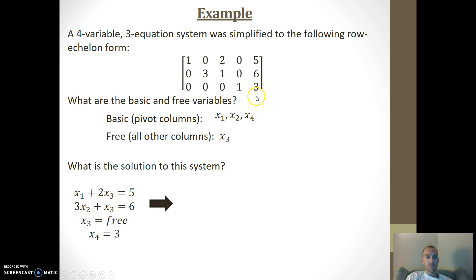And what we do here is we rewrite these equations so that it is the basic variable equals everything else. So here I would subtract the 2x3. And the second, for x2, I'd end up dividing by 3 and subtracting the x3. And then the other two are already simplified.